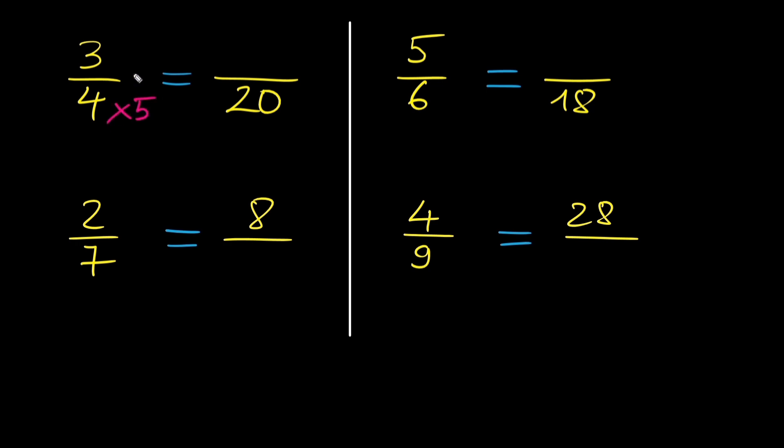Whatever we do to the bottom fraction, we need to do to the top part of the fraction. So we got to multiply the top number by 5. 3 times 5 is 15. That will give us the equivalent fraction 15 over 20, which is equal to 3 fourths.